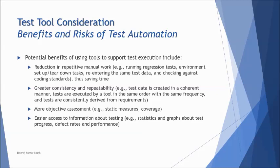The first benefit is reduction in repetitive manual work. For example, rerunning regression tests manually can be very tedious, so using a test automation tool significantly reduces that effort. Greater consistency and repeatability is another benefit — when running a particular test several times, we still get the same result, ensuring consistency in execution outcomes. Repeatability also becomes easy with an automation tool.